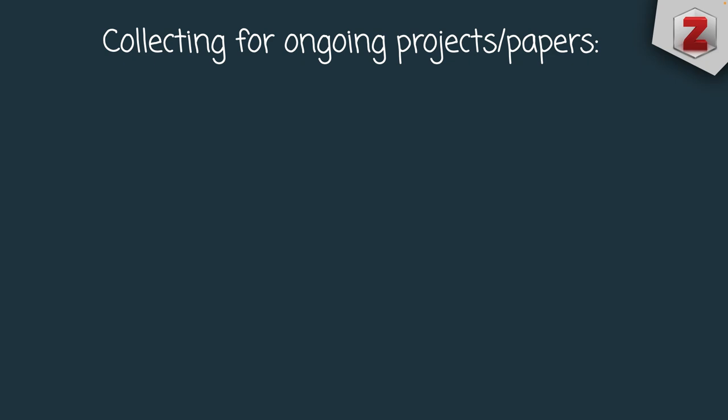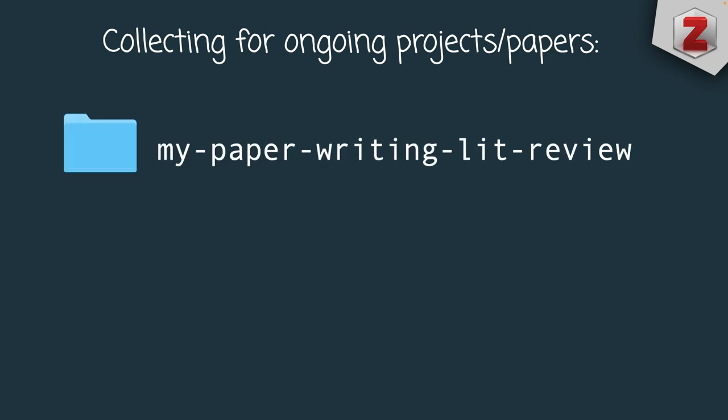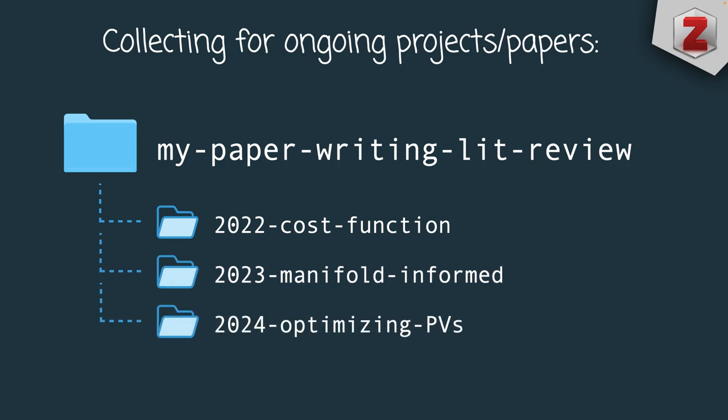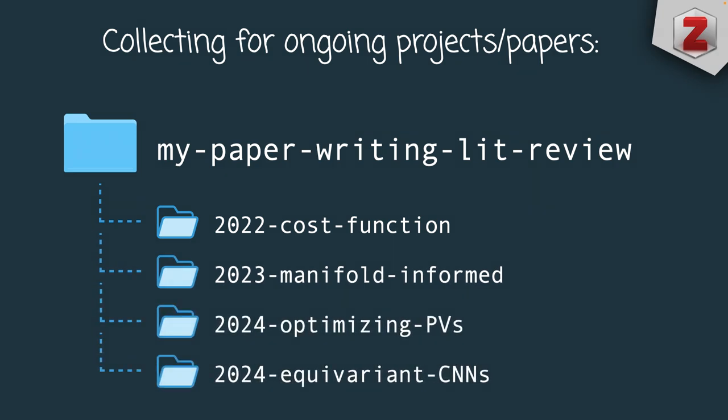I also have one high-level collection that stores literature most relevant to a project or manuscript I'm currently working on — I call this collection my paper writing literature review. Inside, I have sub-collections whose names start with the year I began working on that project. Adding an item to a specific project's collection does not remove it from its category, so a paper from the data analysis category can also be added to the current research project. It can simply be present in multiple collections.